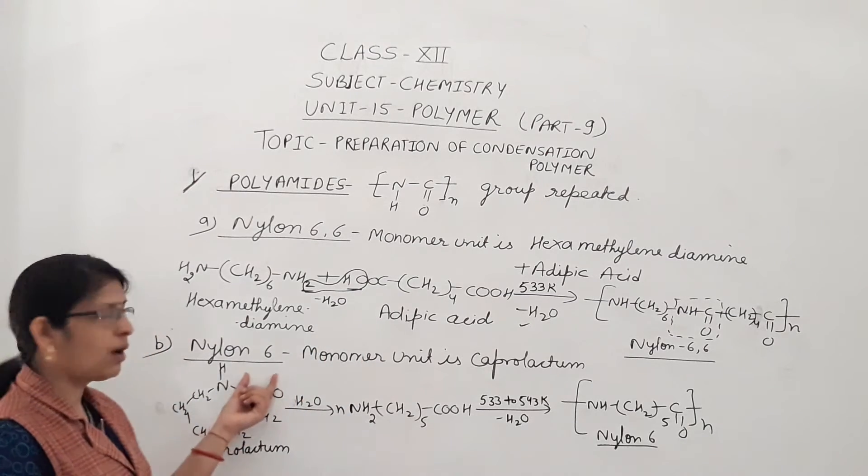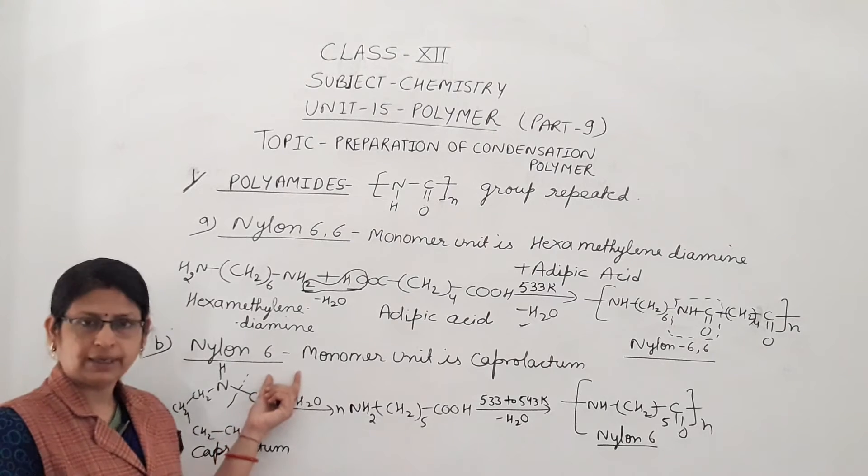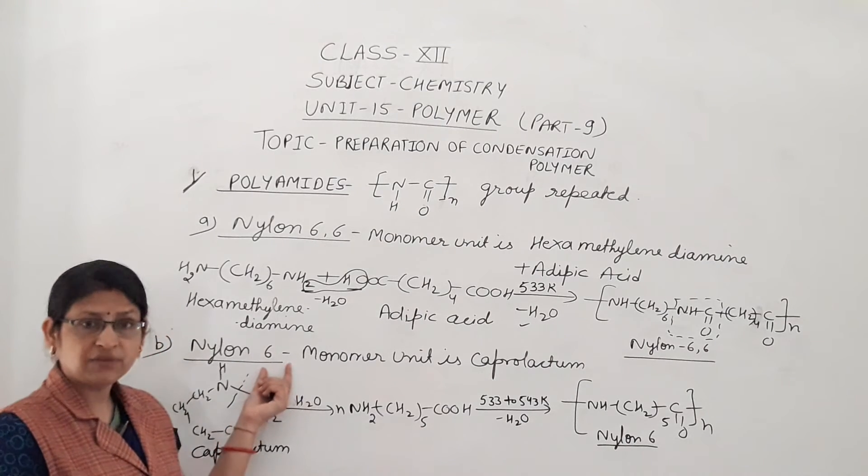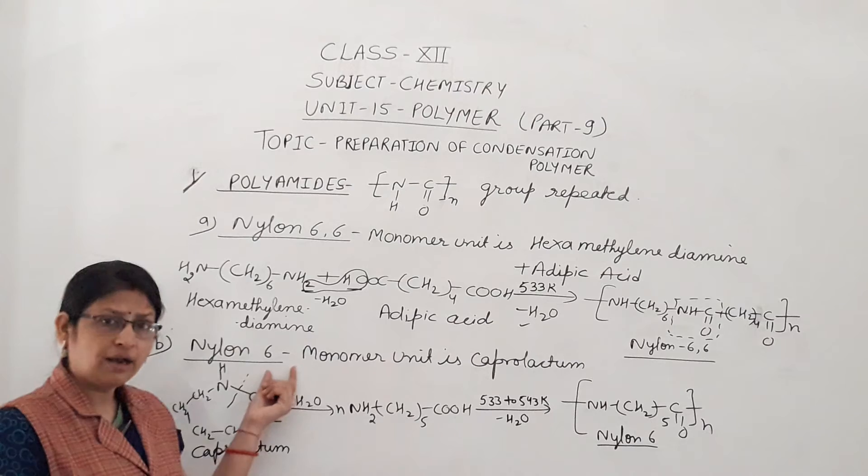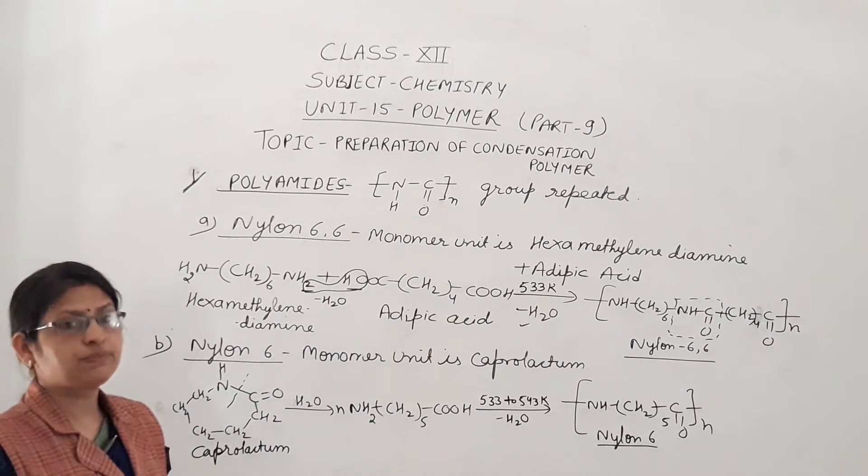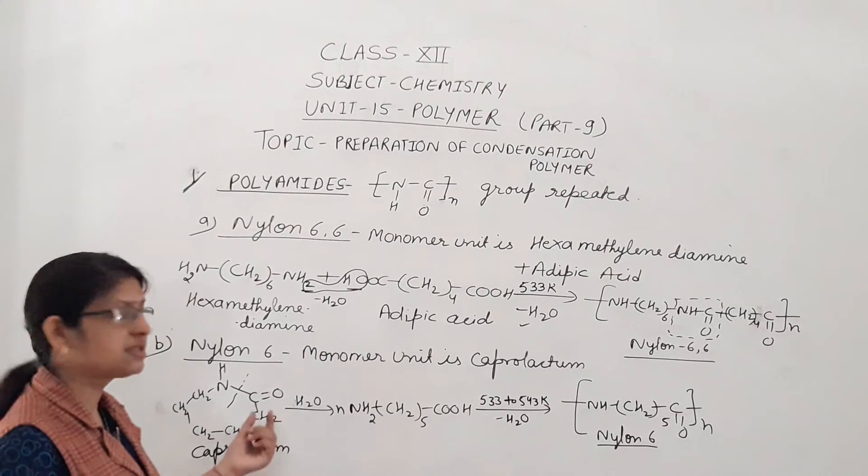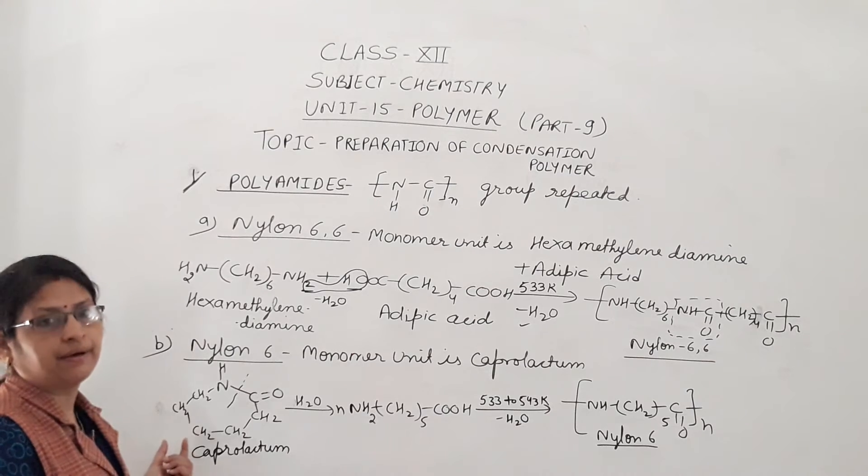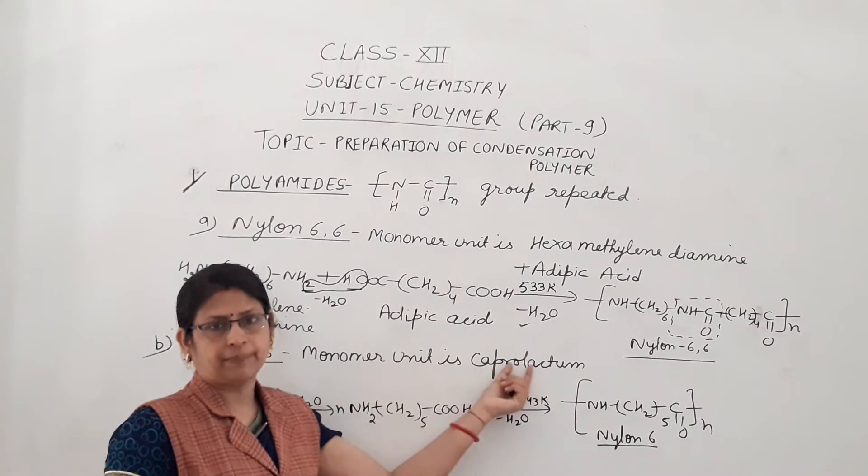Now second polyamide is nylon 6 only. Nylon 6. So what is the significance of 6 here? Here one monomer unit is present in which 6 carbons are present. Its monomer unit is caprolactam.